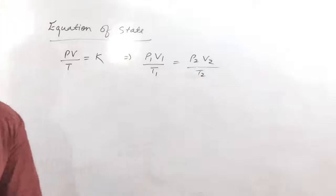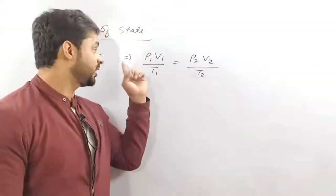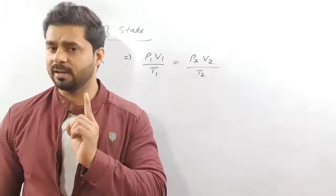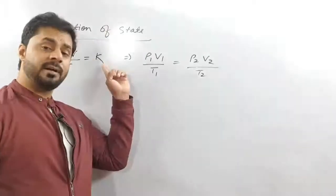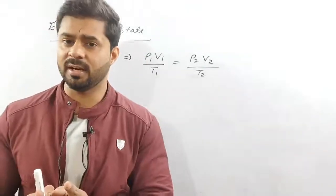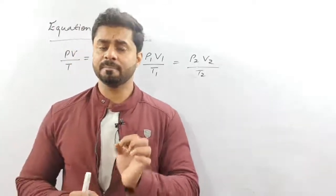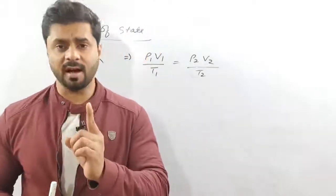Remember? So this equation of state applies to different gases. When we observed PV/T for one mole of different gases, the value was the same. Yes — this gas constant is called the universal gas constant.